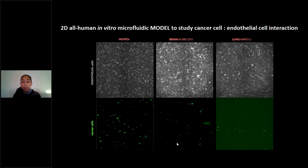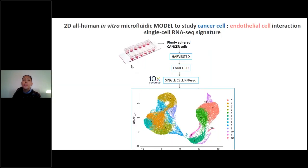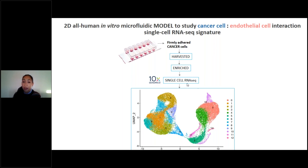These are primary cancer cells from patients that are adhering to the endothelium. We use this model to study single cell RNA-seq signatures. The firmly adhered cancer cells were harvested and enriched, and then single cell RNA-seq signatures were studied using the 10x Genomics platform.